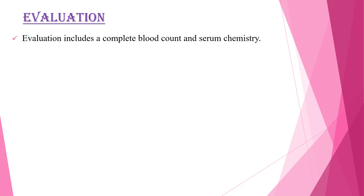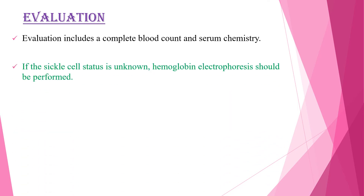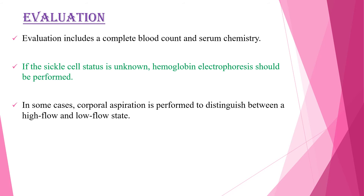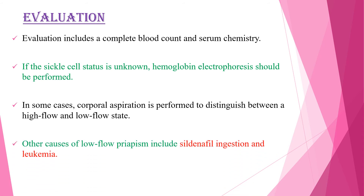When evaluating a child who presents with acute Priapism, which is a medical emergency, a complete blood count and comprehensive chemistry should be obtained. On CBC, all cell lines should be checked, as leukemia is one of the causes of Priapism in children. If sickle cell status is not previously known, hemoglobin electrophoresis should be performed. In some cases, corporal aspiration is performed to distinguish between high-flow and low-flow states based on the pH and oxygen content of the blood in the corpora. Other causes of low-flow Priapism include sildenafil ingestion and leukemia.